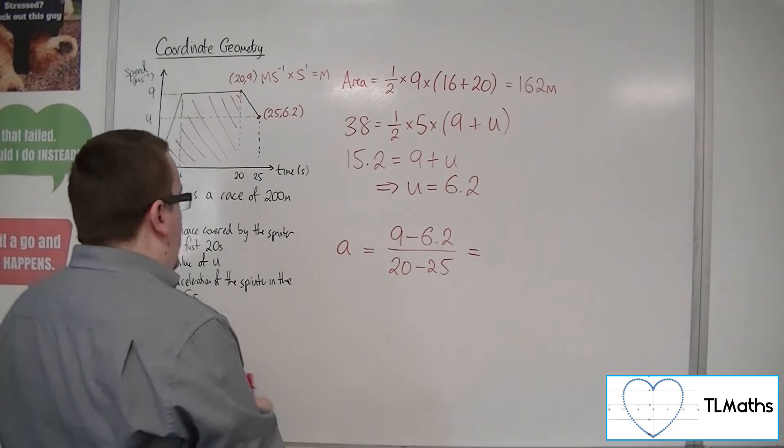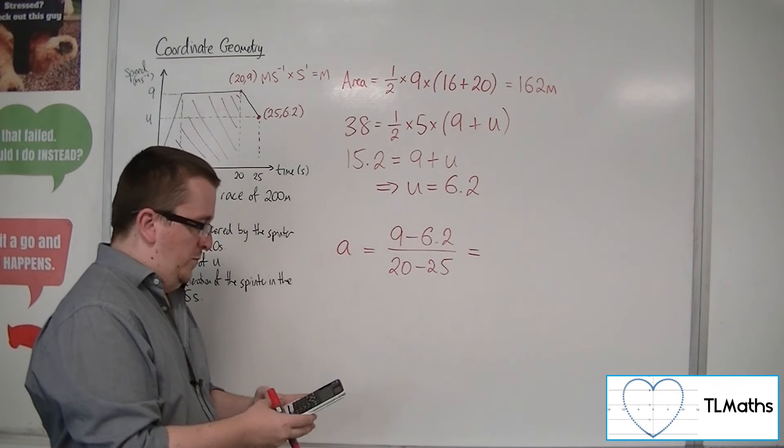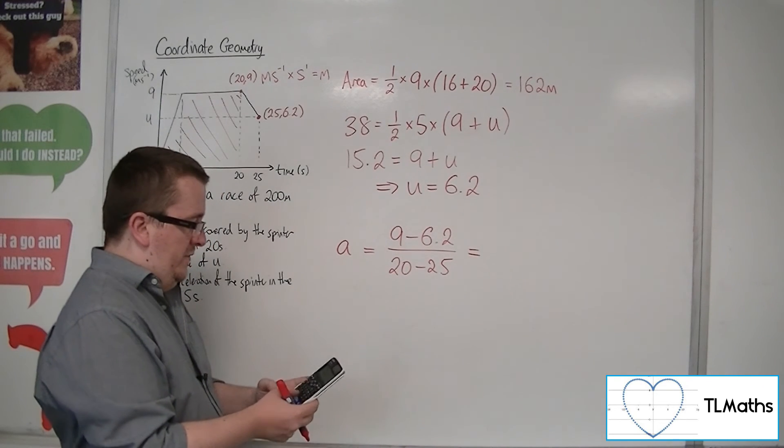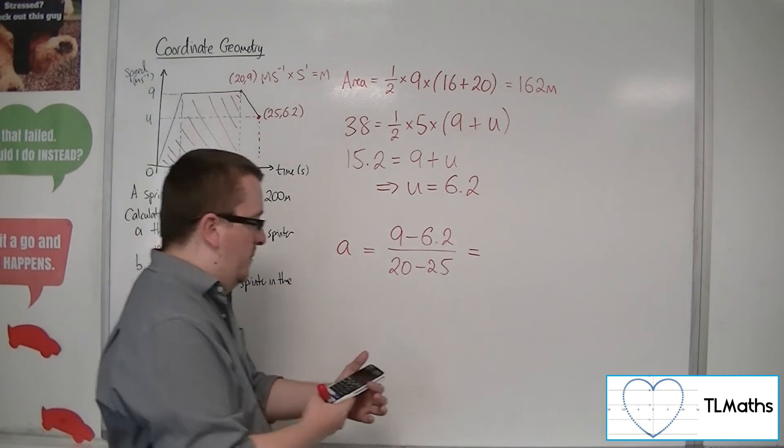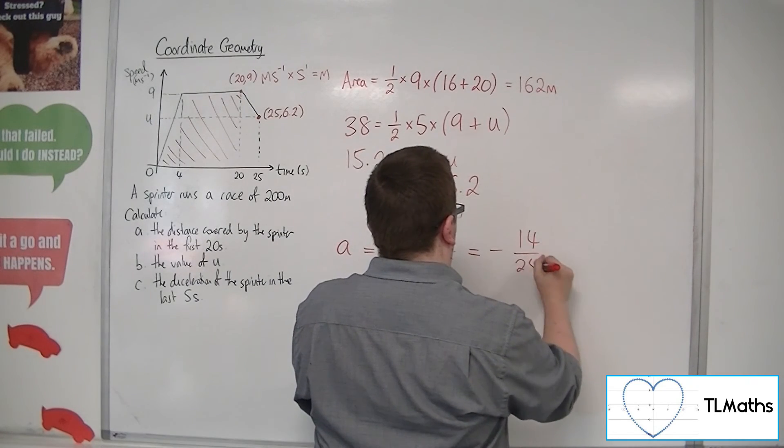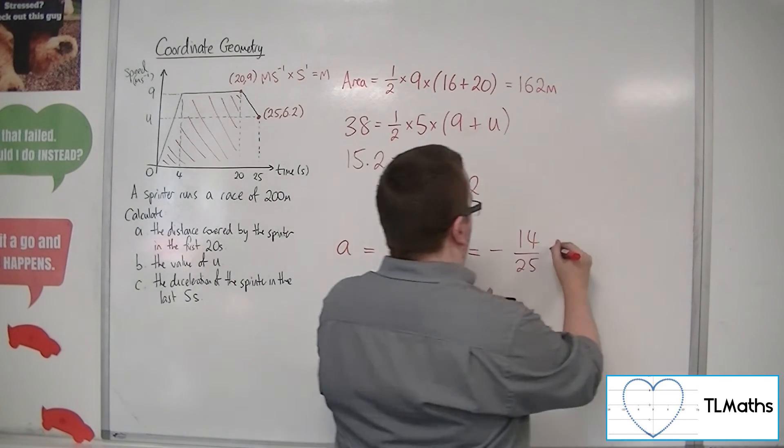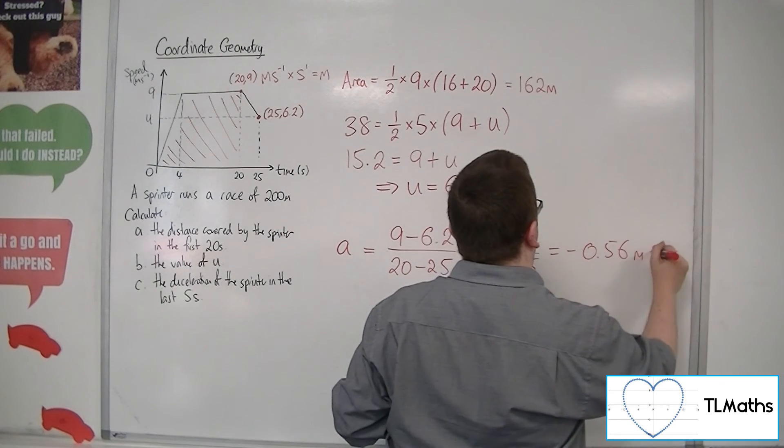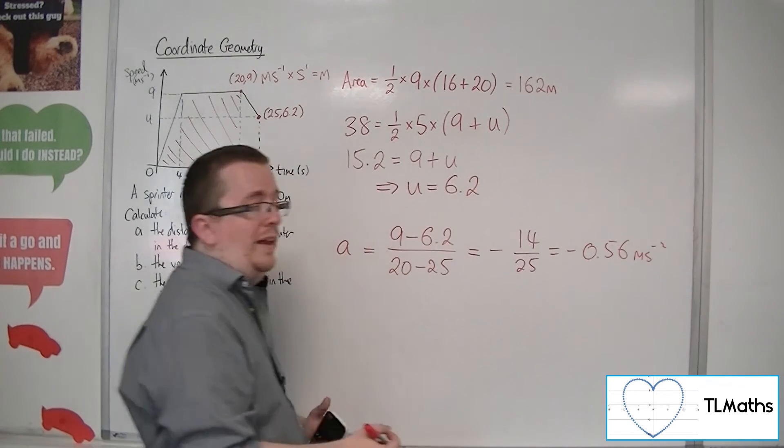So we've got 9 take away 6.2 in the numerator, divided by 20 minus 25 in the denominator. So we get minus 14 over 25, so minus 0.56 metres per second per second.